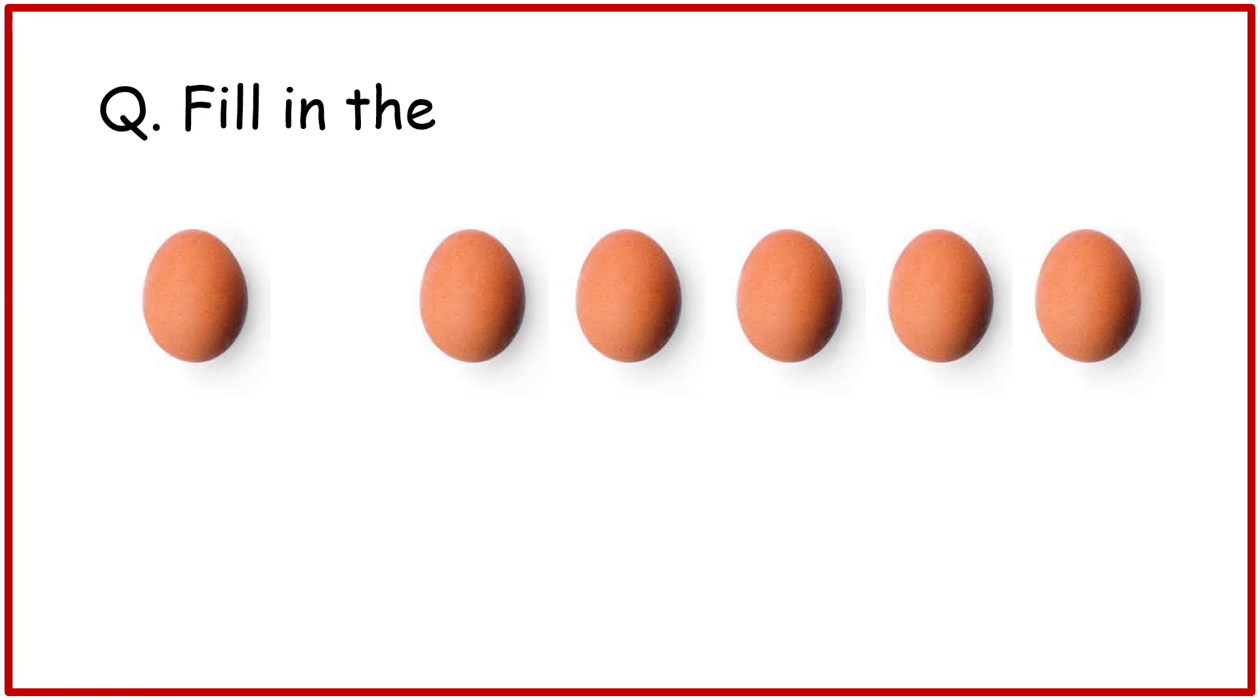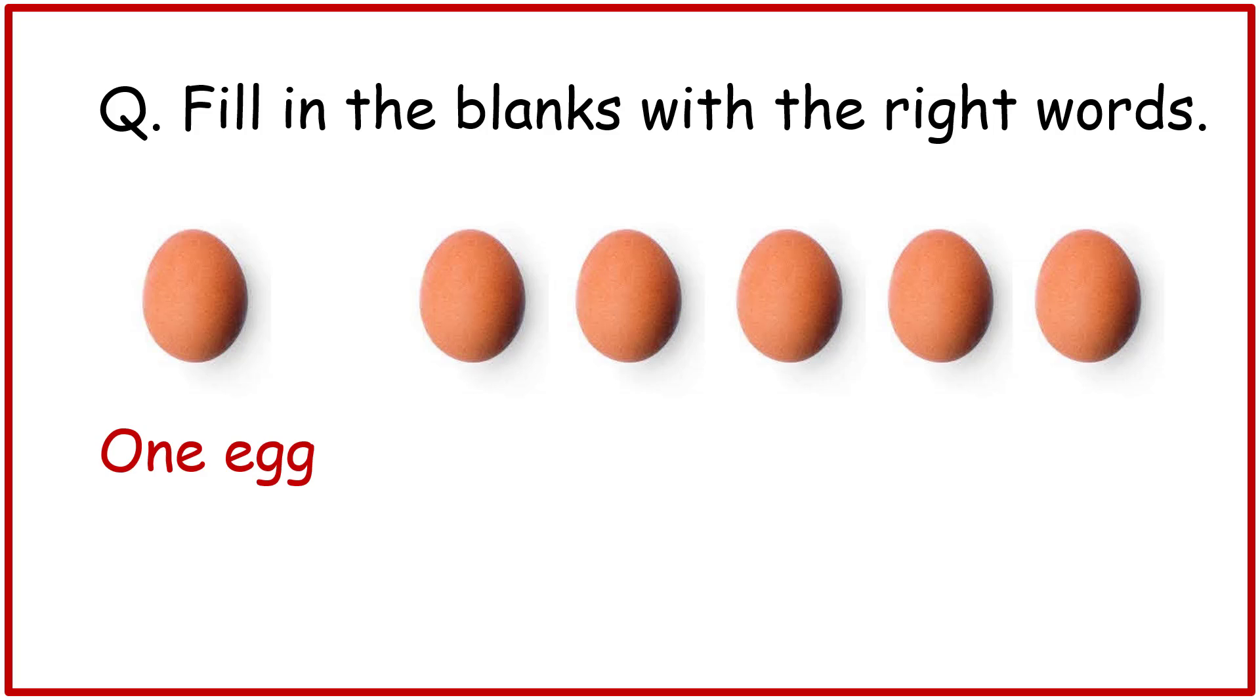Question. Fill in the blanks with the right words. 1 egg - singular, 5 eggs - plural. There is 1 egg, so we write singular. There are 5 eggs, so we write plural.